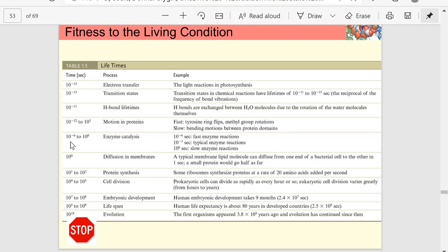Enzyme catalysis, maybe 10 to the minus 6 to 10 to the 0, or 1 second. Diffusion across membranes, 10 to the 0. Protein synthesis, 10 to the 1st, 10 to the 2nd. Some ribosomes synthesize proteins at a rate of 20 amino acids per second.